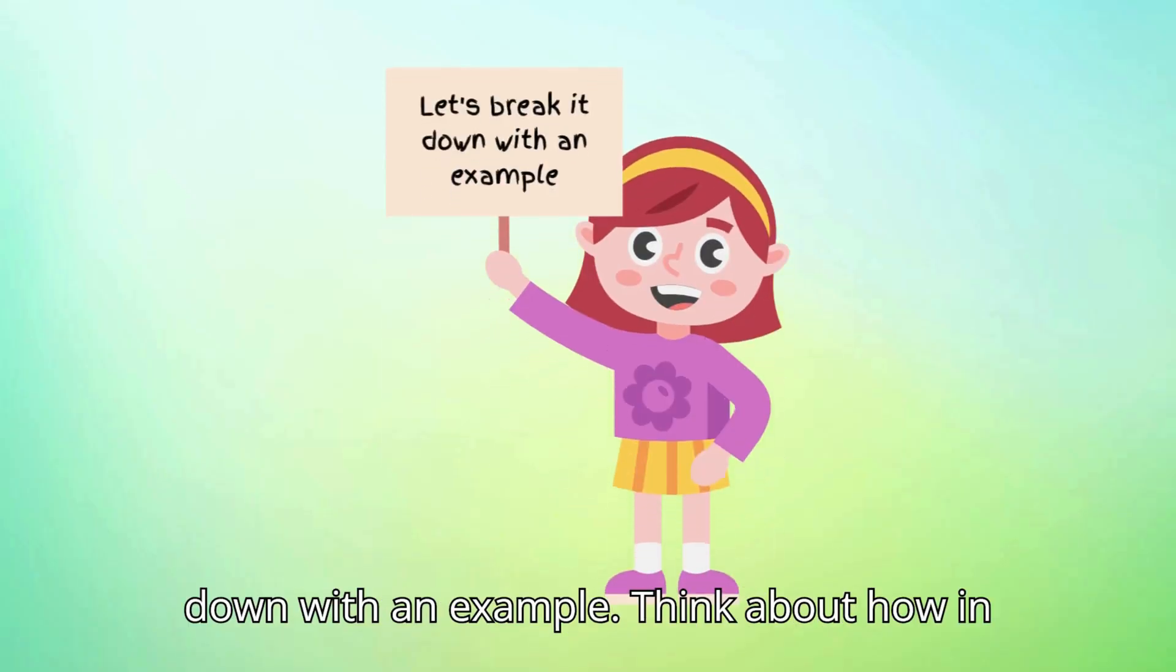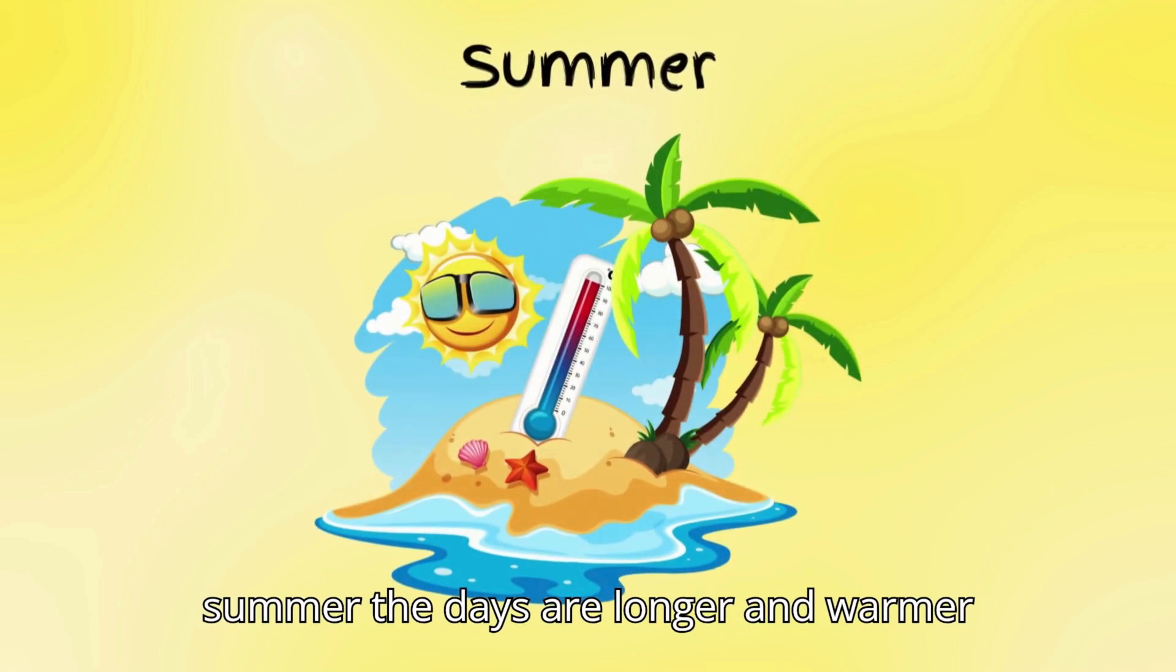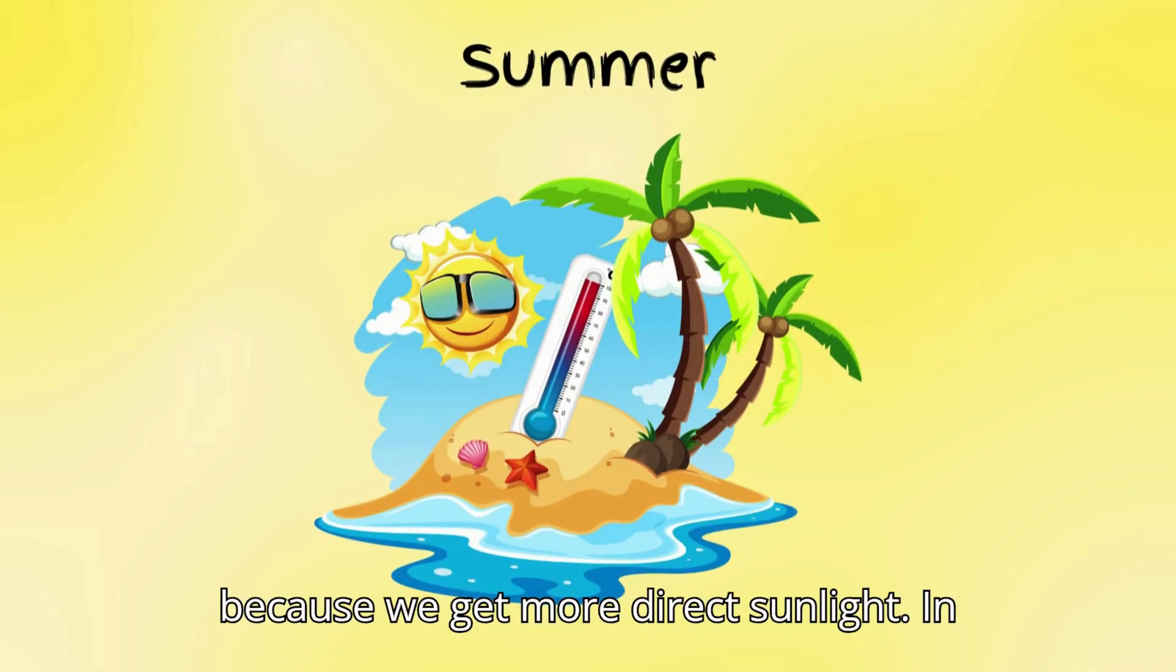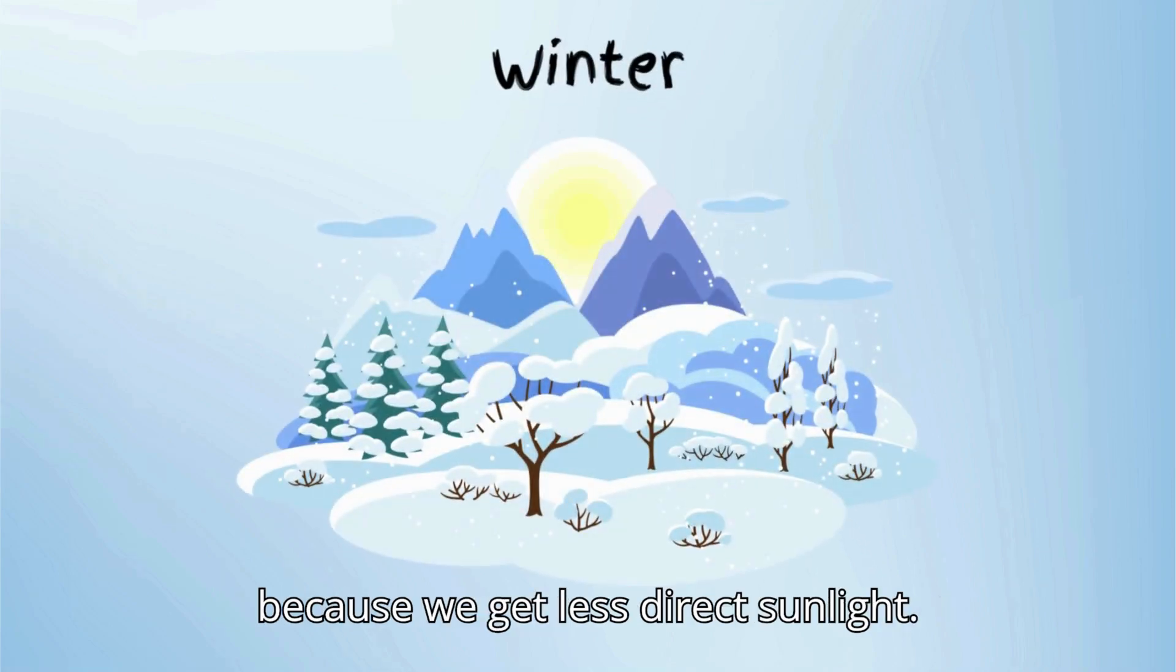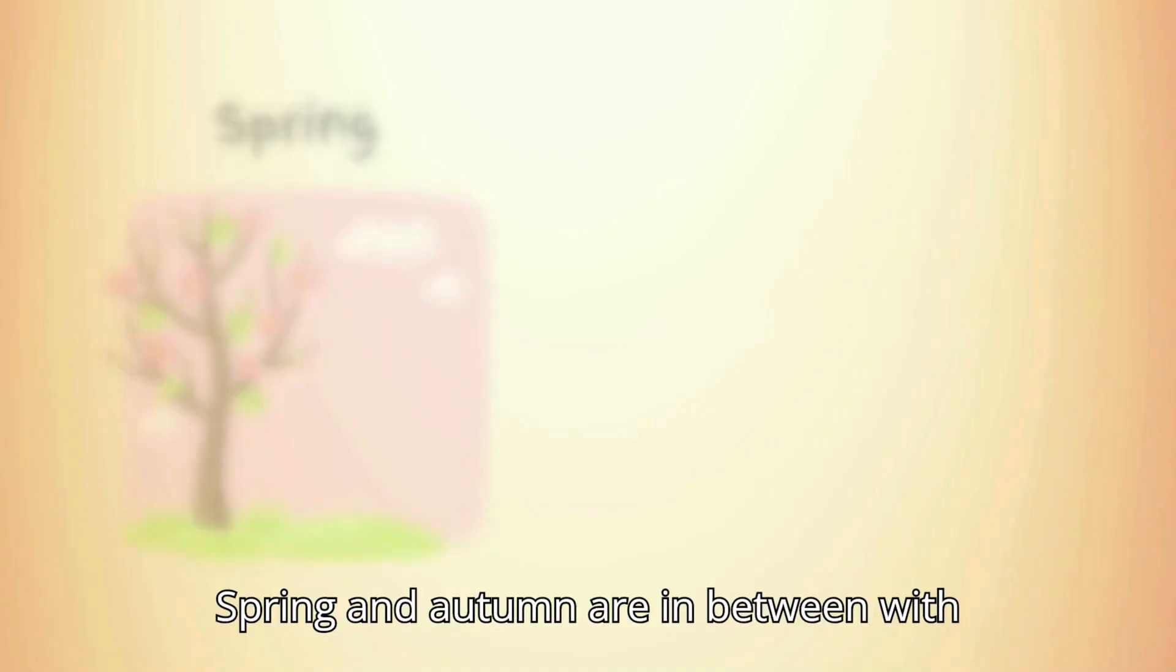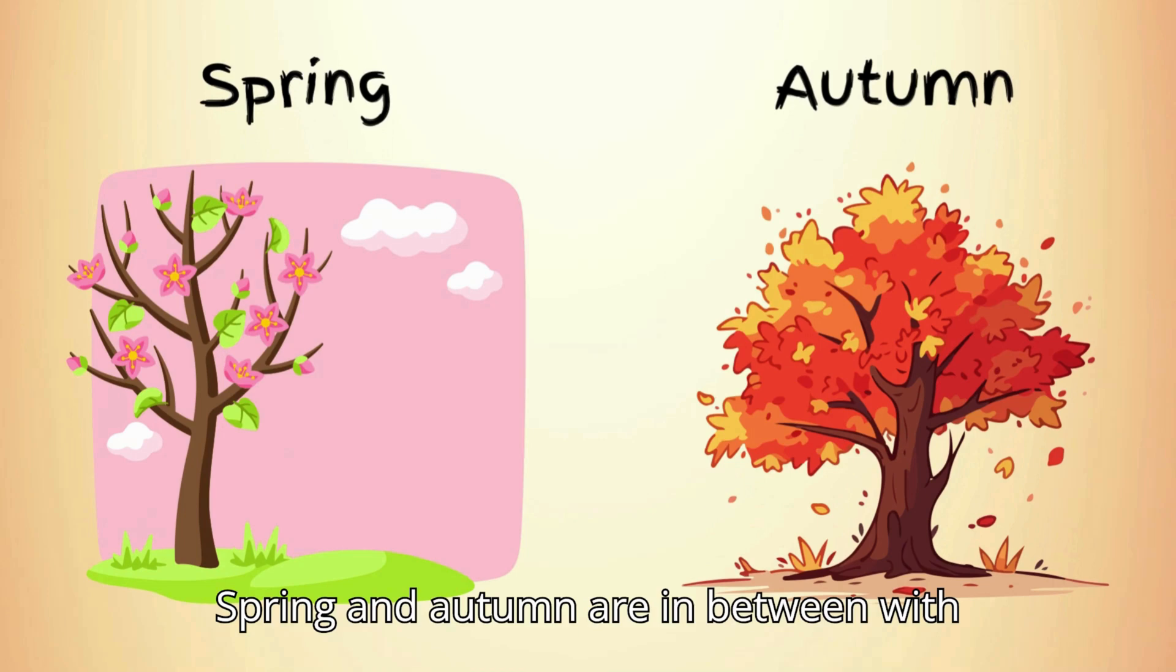Let's break it down with an example. Think about how in summer, the days are longer and warmer because we get more direct sunlight. In winter, the days are shorter and cooler because we get less direct sunlight. Spring and autumn are in between, with more balanced day and night lengths.